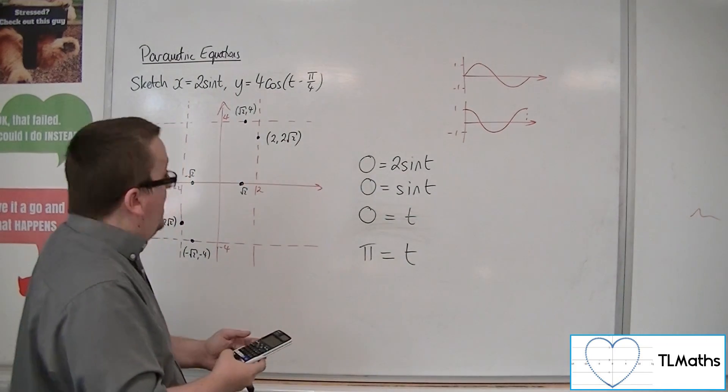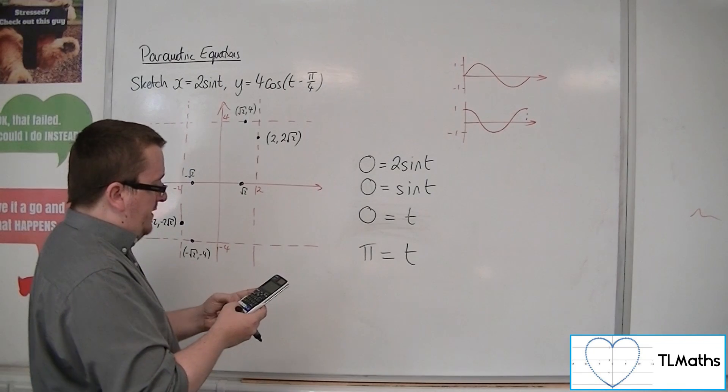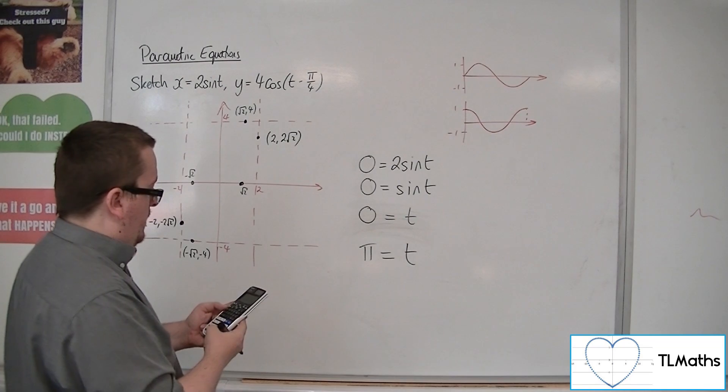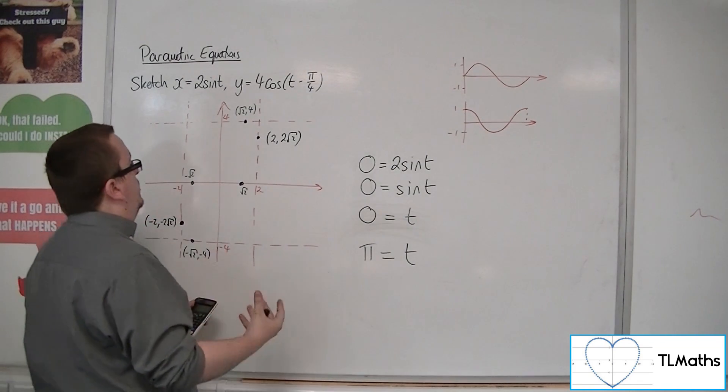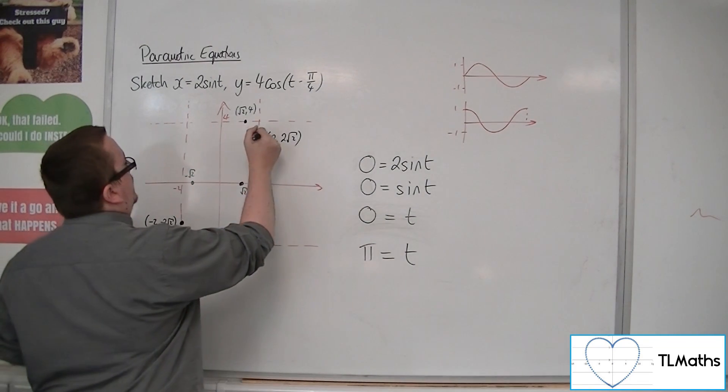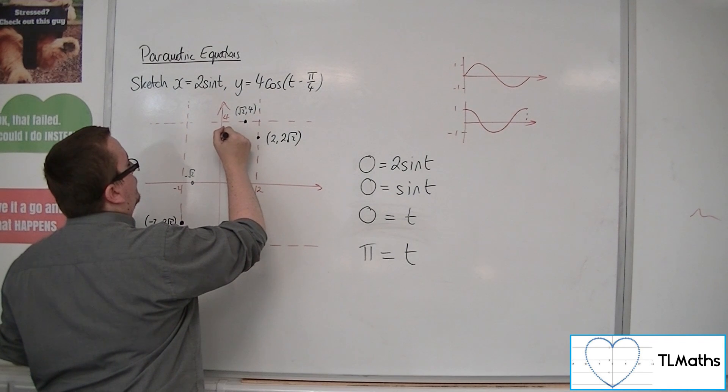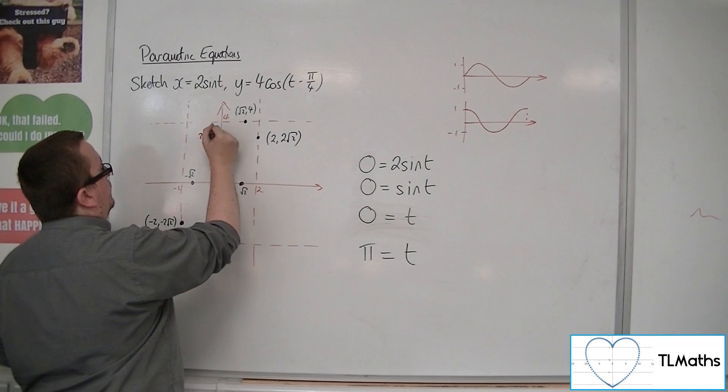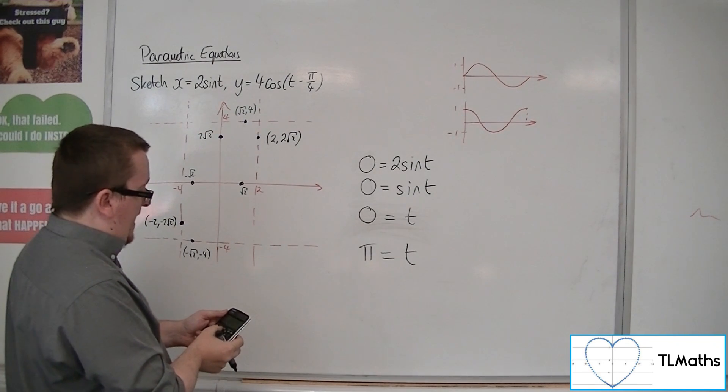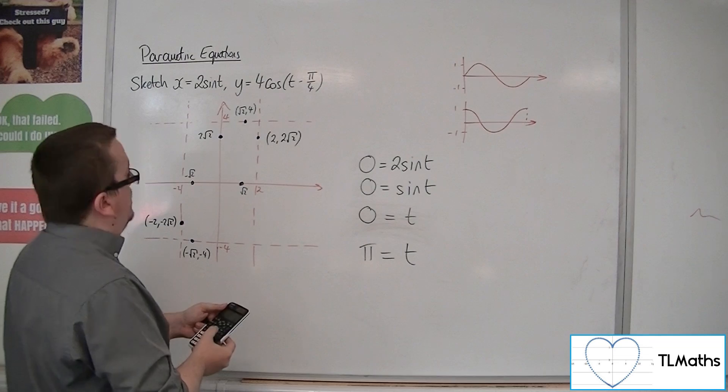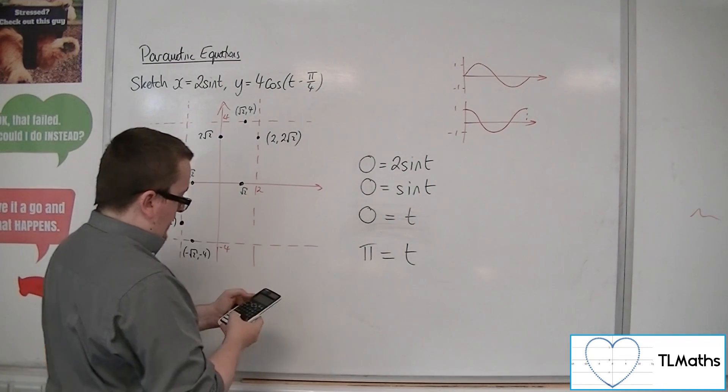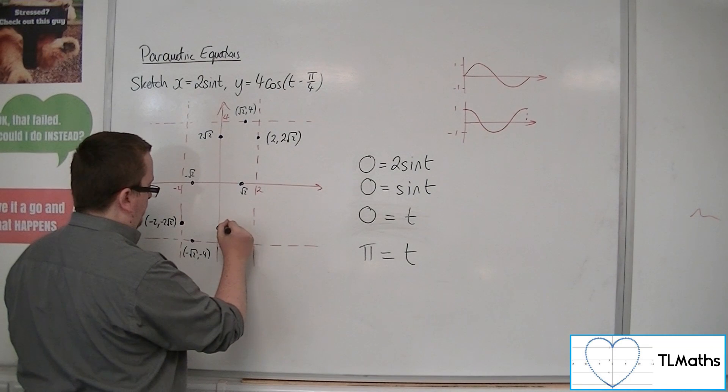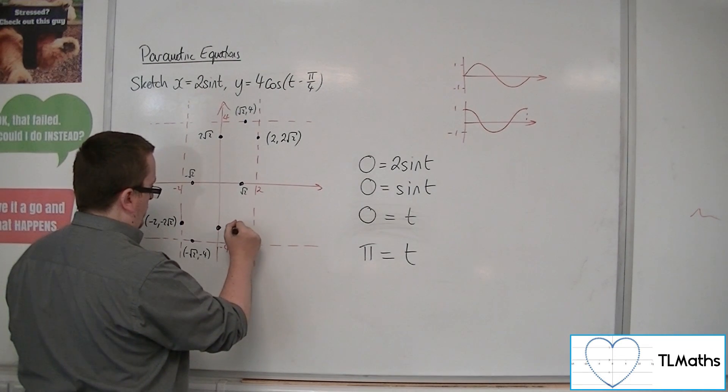So when t is 0, substituting into that, 4 lots of cos of 0 take away pi over 4 gets me 2 root 2. So crossing through at 2 root 2, and you'd be guessing that this would be minus 2 root 2, wouldn't you? So substituting pi into this, lo and behold, minus 2 root 2.